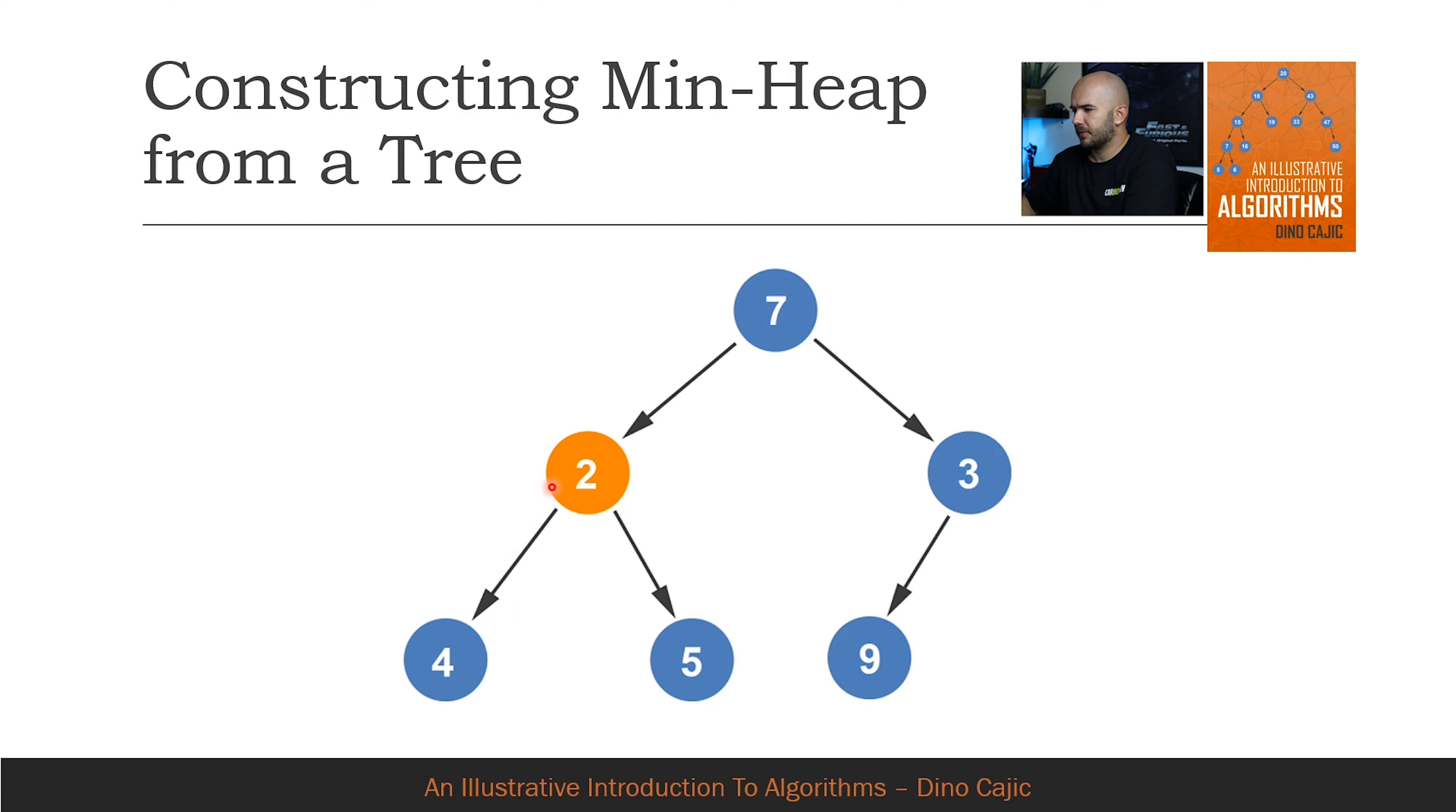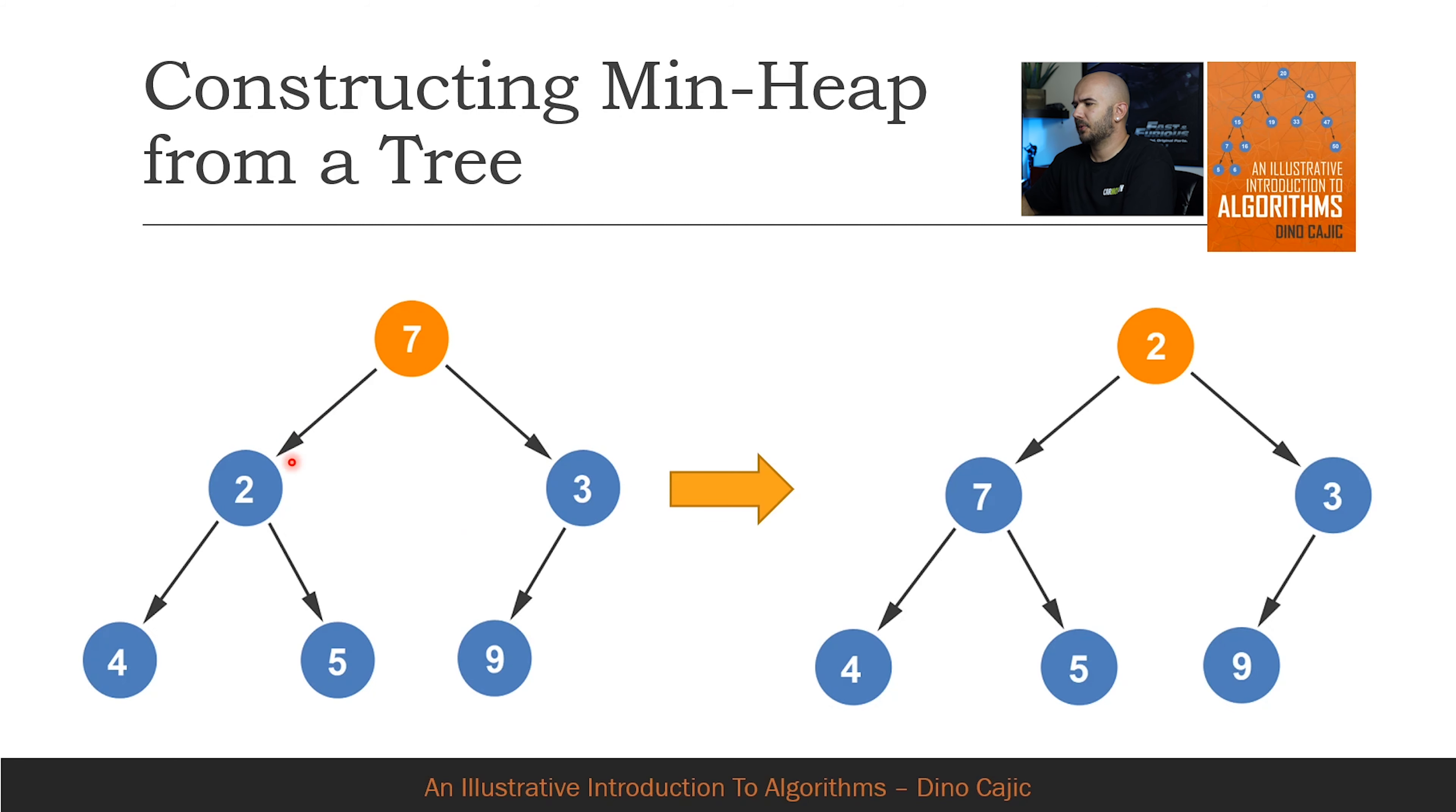We're done with the second node and we move to the node before, node 1. At node 1, there are two children. A comparison is made between the two children and the smallest node is selected, in this case the node with the value of 2.